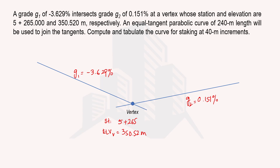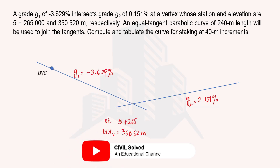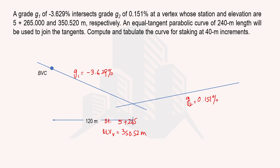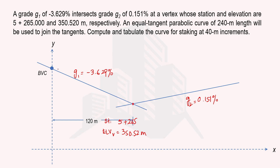Since this is an equal tangent parabolic curve, we will have the beginning and end point of the vertical curve exactly half of the length of the vertical curve from the vertex. The beginning of the vertical curve, BVC, will be at a distance of half the length, which is 120 meters from the vertex. Similarly, the end point of the vertical curve, EVC, will be 120 meters on the other side of the vertex.